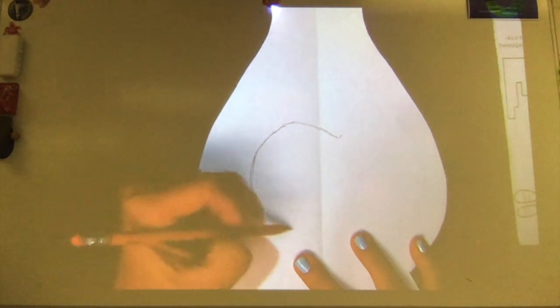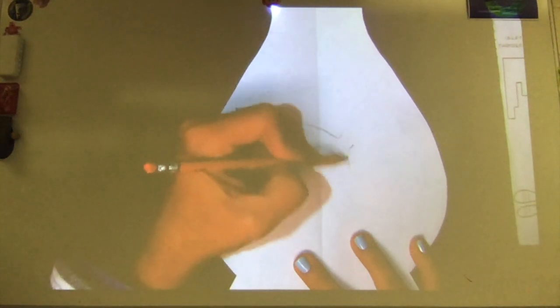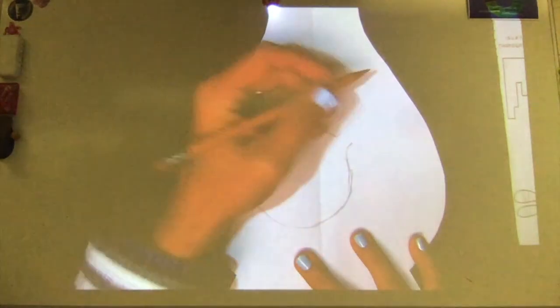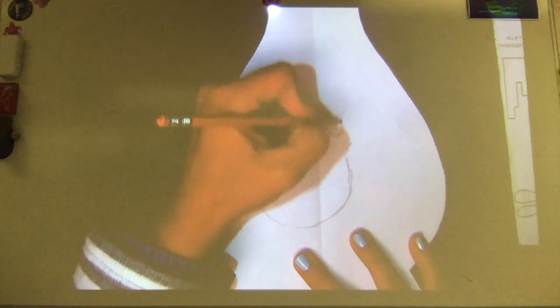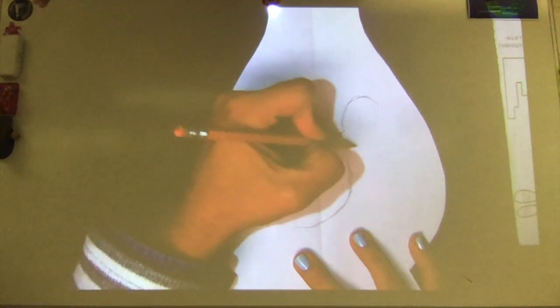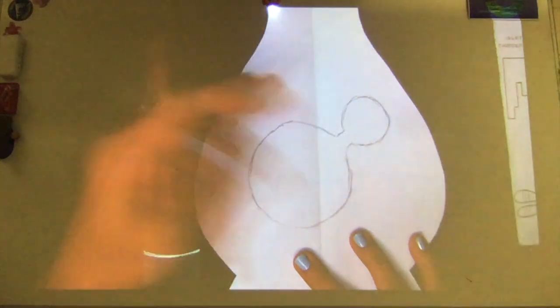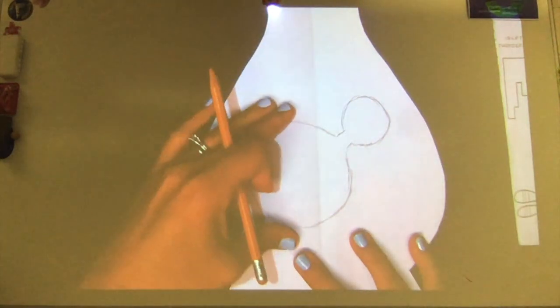So when you draw your patterns or your objects today, make sure that you're using the space on your pot effectively. So making sure you put things at the top, in the middle, at the bottom.